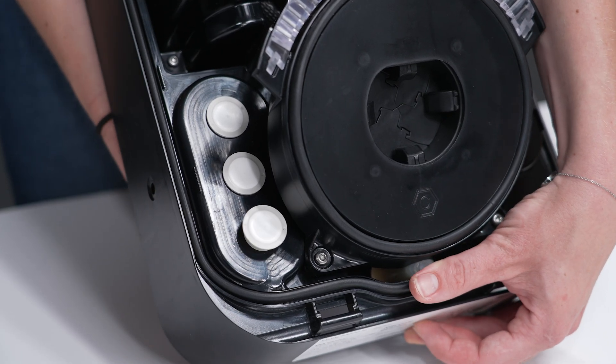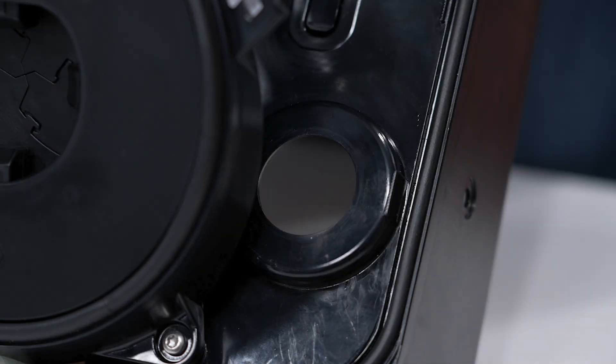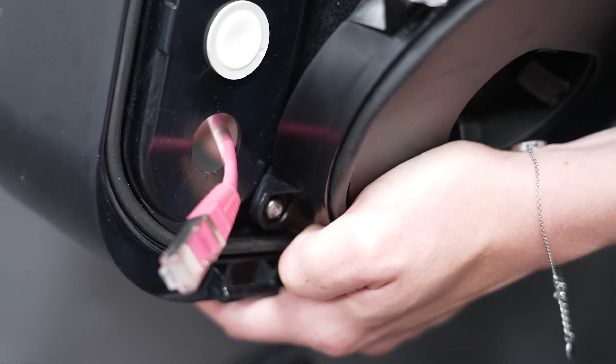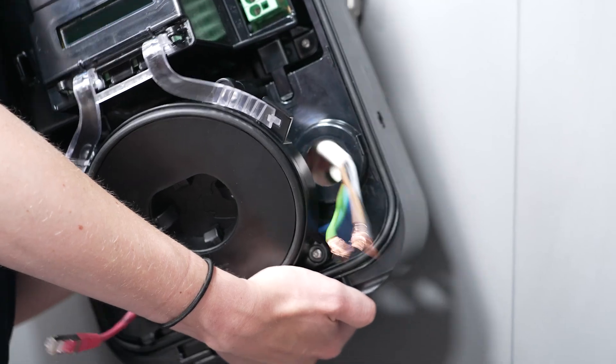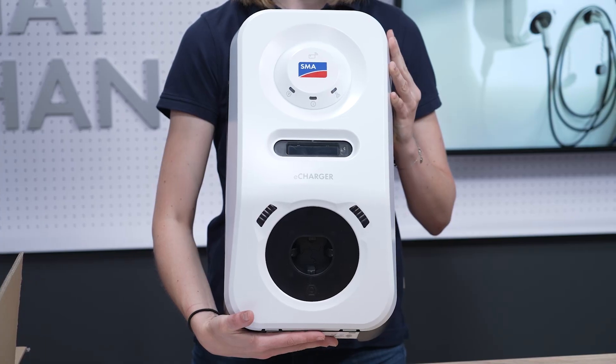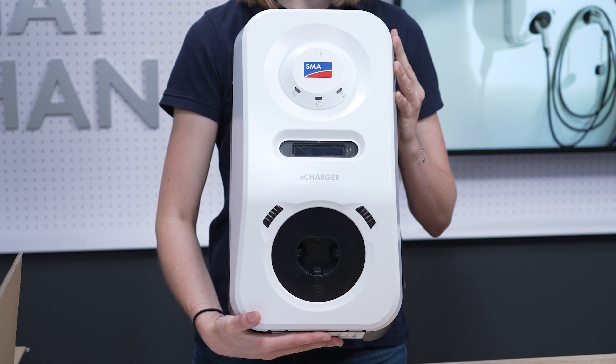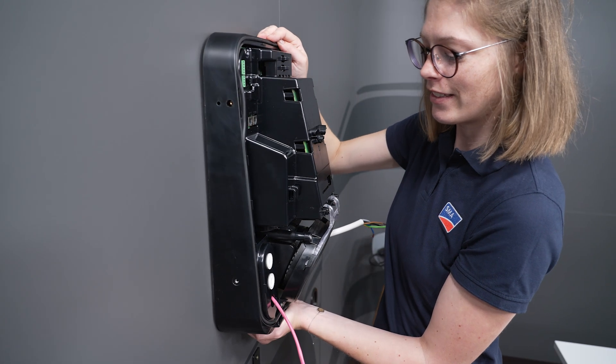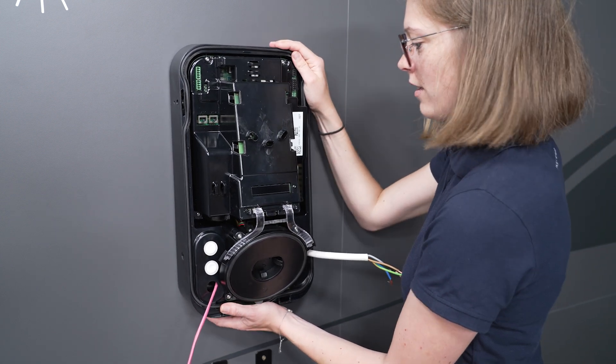Now remove the required number of seals depending on the supply lines and guide the appliance over the already cut lines. Thanks to the low weight of less than 5 kg, one-man installation is possible without any problems. Guide the appliance flush to the wall and latch it to the wall bracket with a downward movement.